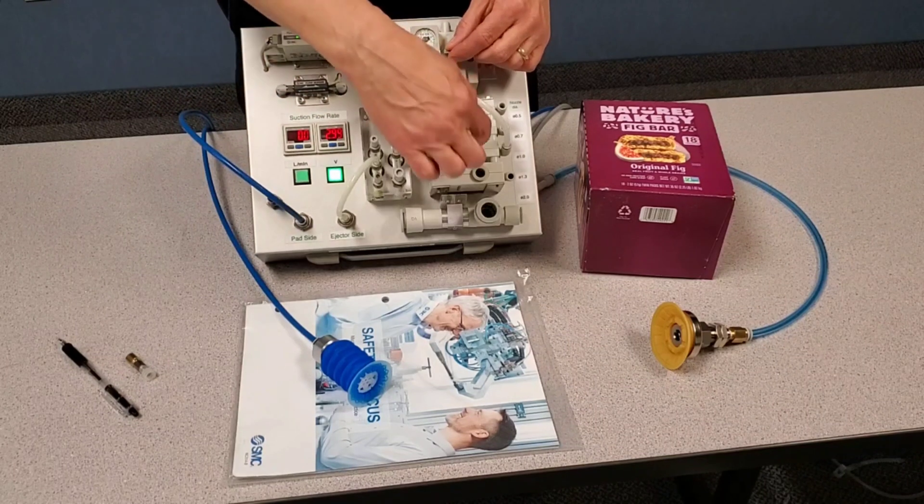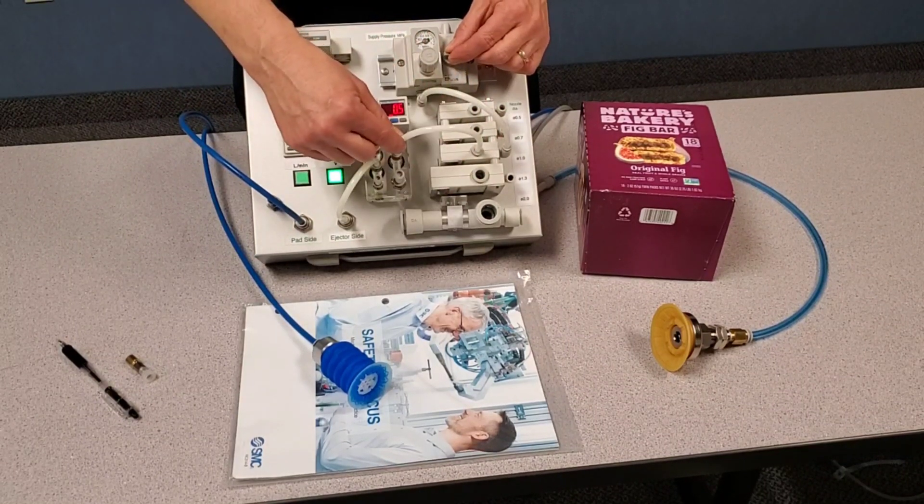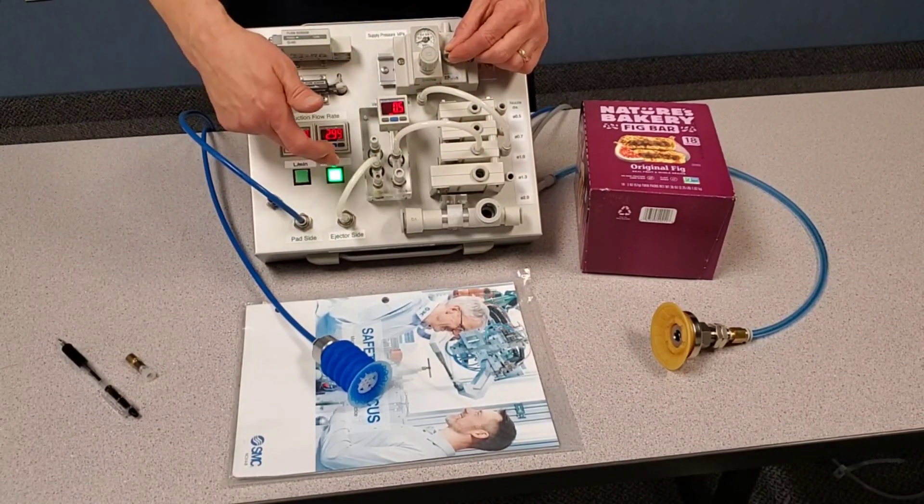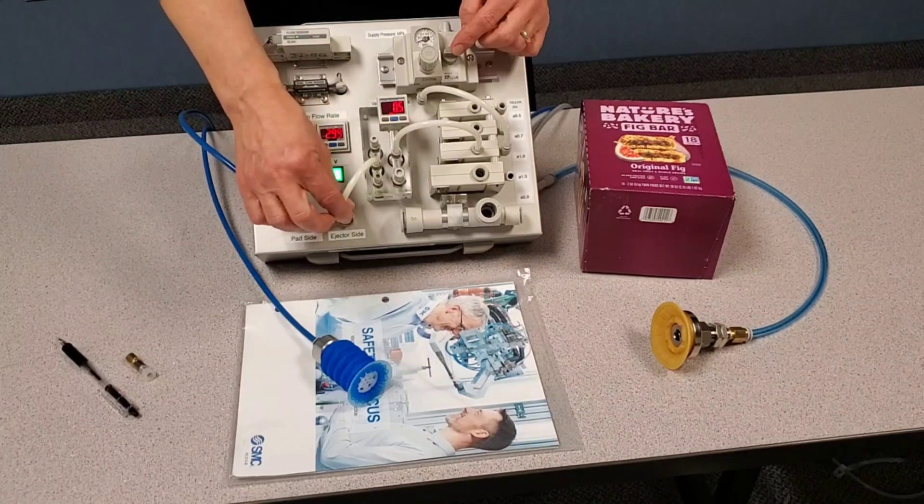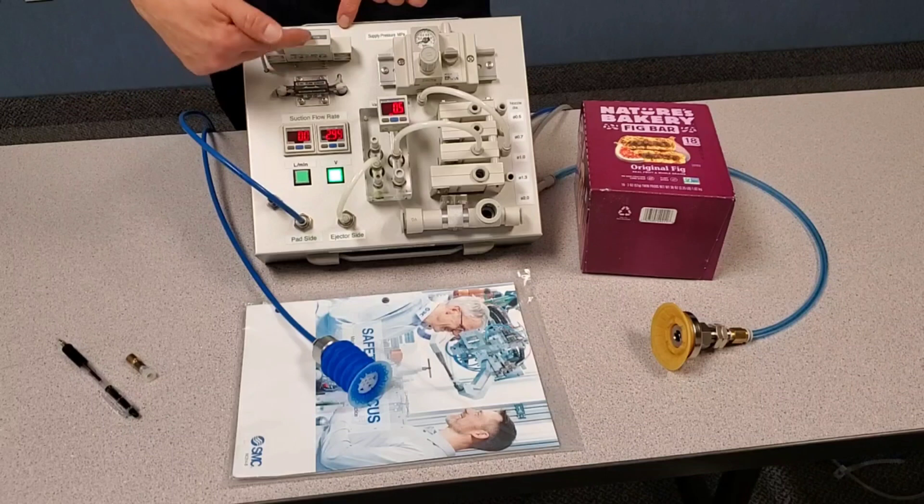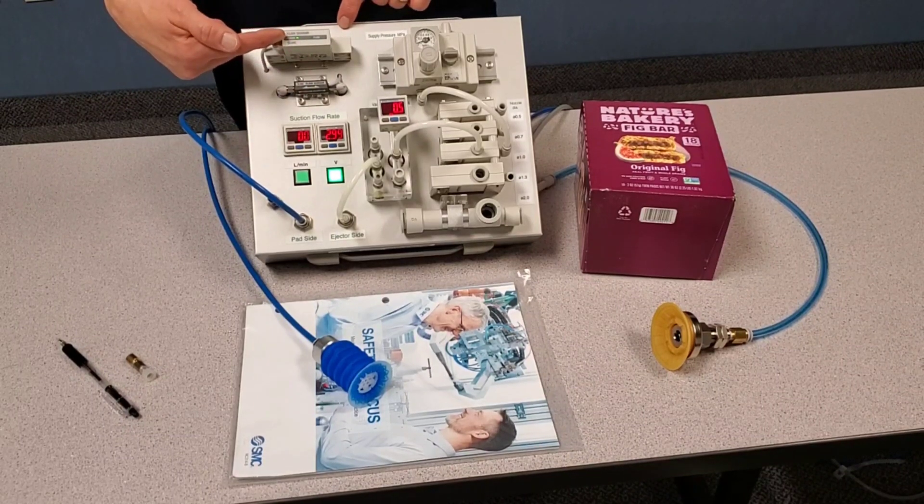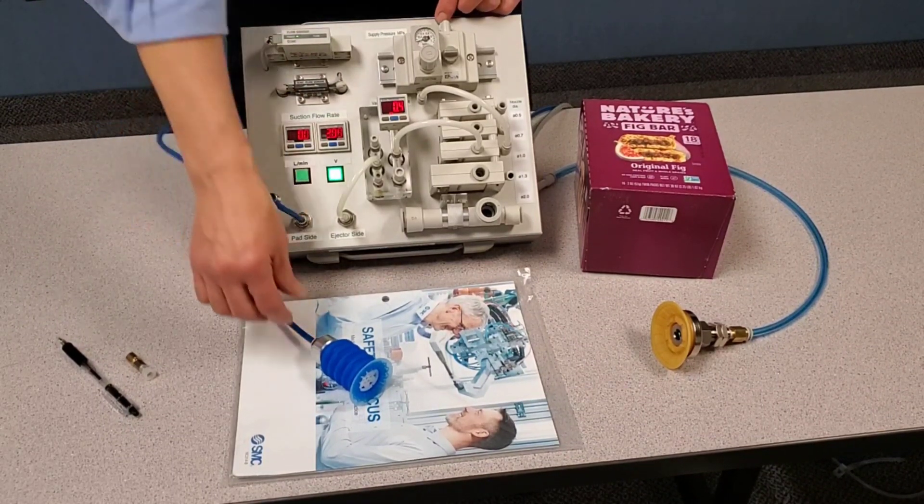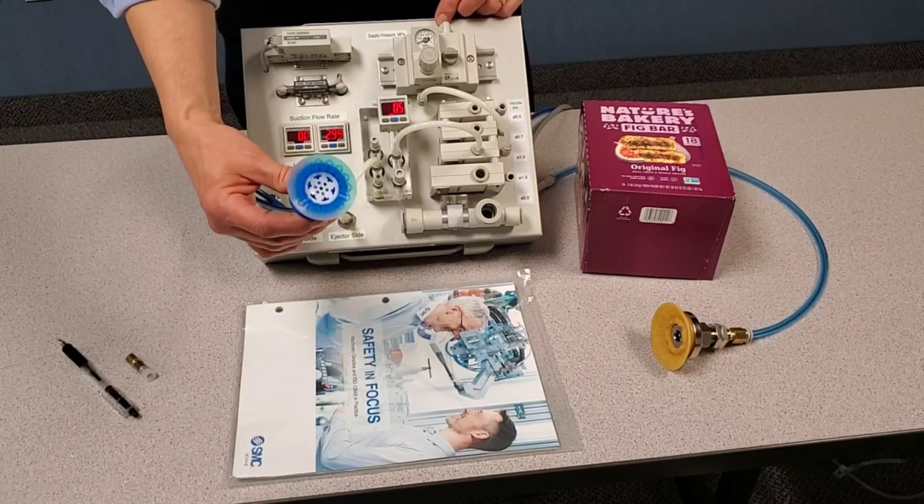When I turn pressure on, we're going to be creating vacuum in this tube, reading vacuum pressure. We have a two-port solenoid valve behind the panel. It's allowing flow through one of these two flow meters, and then it's coming out this blue tube to this vacuum cup.